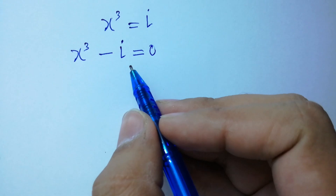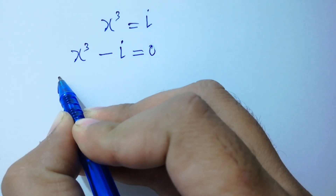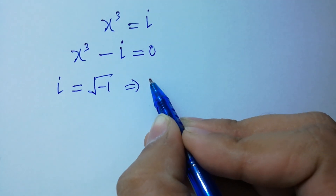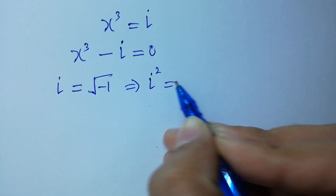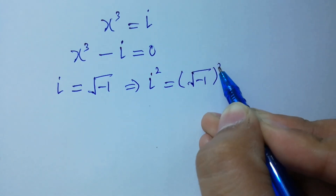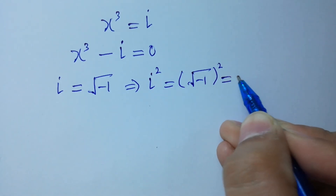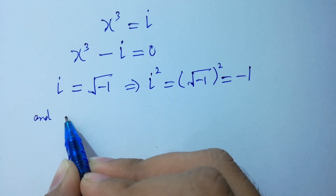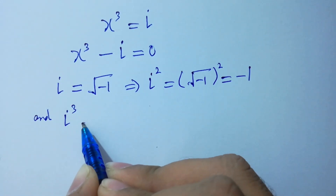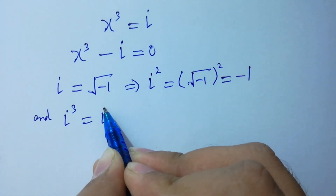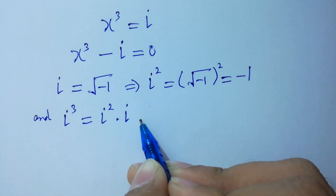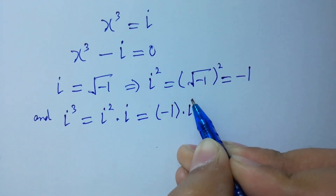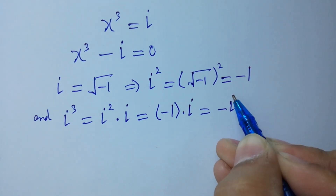As we know that i equal to square root of minus 1. Take square on both sides: i square equal to minus 1. And i cube equal to i square times i, so i square equal to minus 1, we have minus 1 times i, which is equal to minus i.